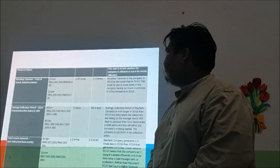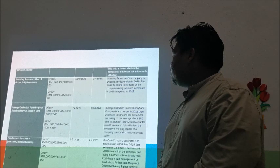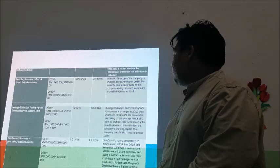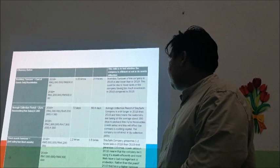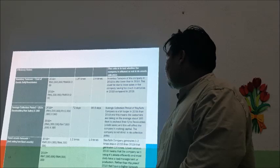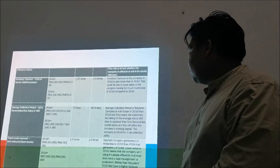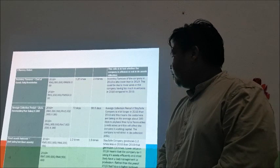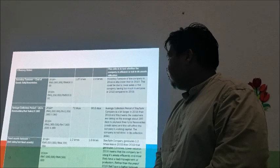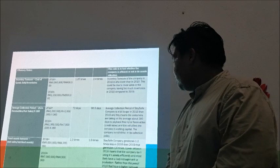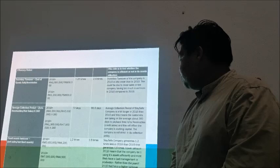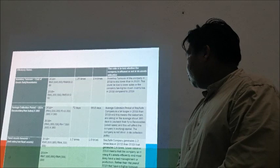For the average collection period, in 2018 we got 72 days and in 2019 we got 67 days. On average, customers take about 16 days to pay back. For fixed asset turnover, in 2018 we got 1.25 times and in 2019 we got 1.6 times. We generated 1.25 times in 2018 and 1.6 times in 2019.